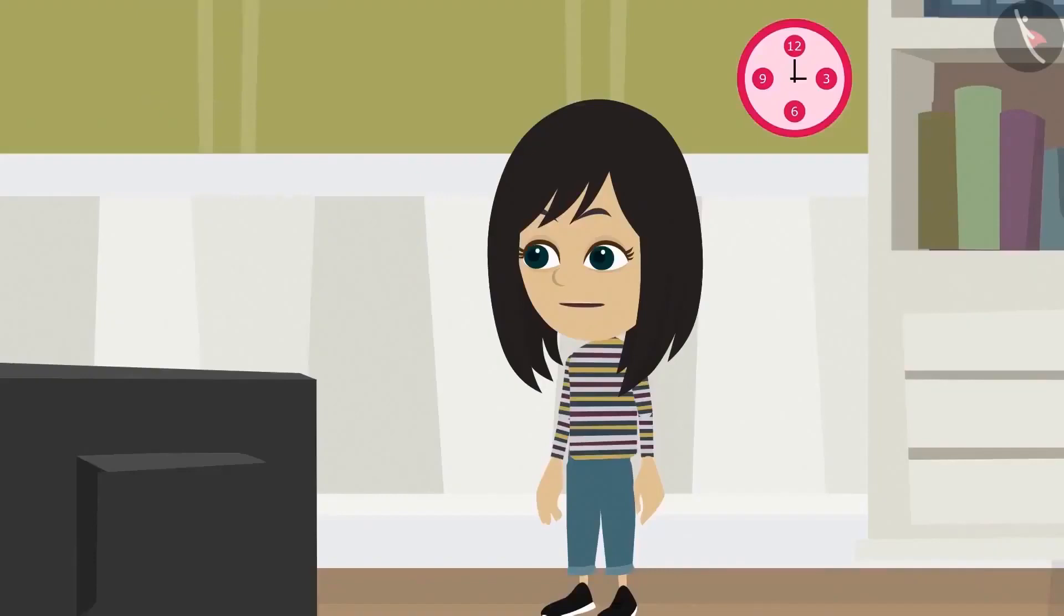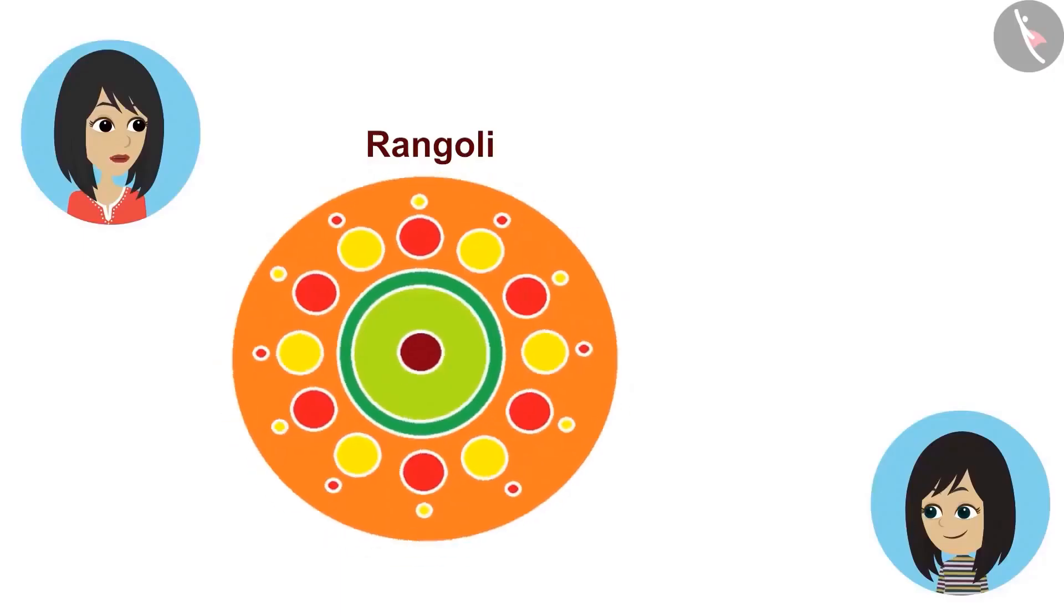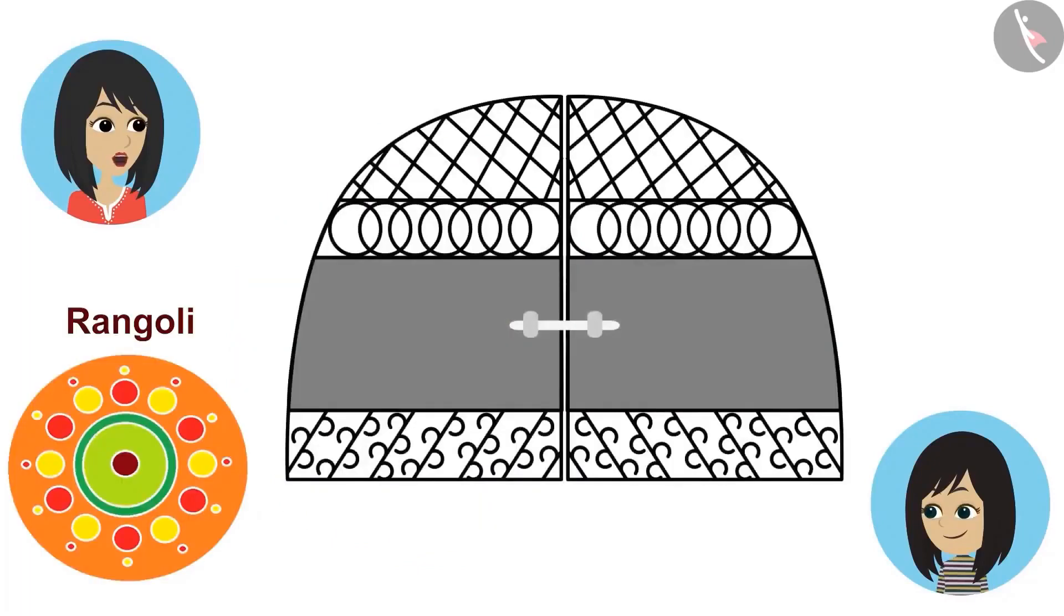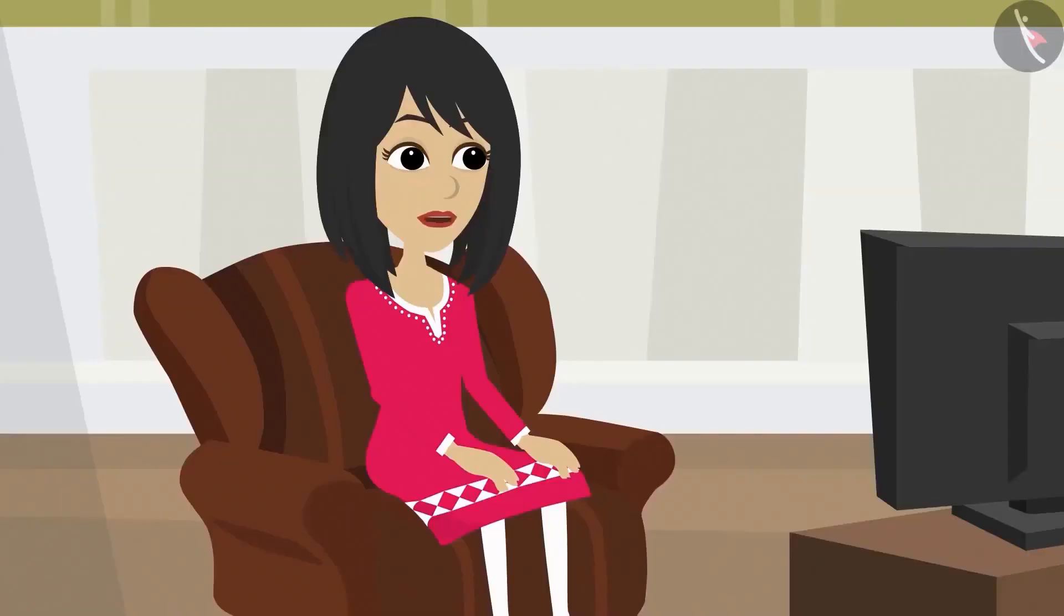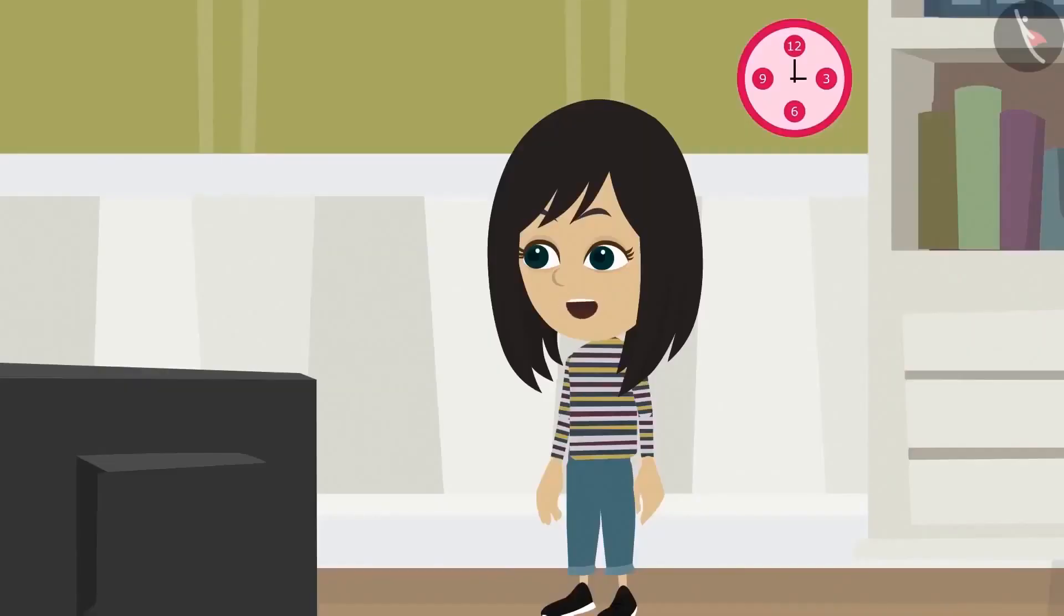The difference is the number of circles. Neha, the number of circles will be different in different designs. There is also a difference in the way the circles are placed. Look. In the design of the rangoli, circles are not overlapping each other. But in the design on the gate, the circles are overlapping each other. So can you create designs like this too? Yes. See, there is one more thing to note. More shapes have been used in the design of the gate along with the circles.